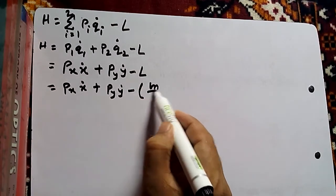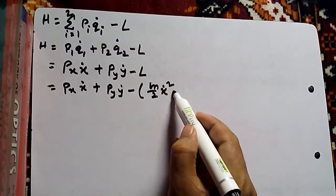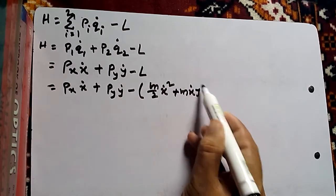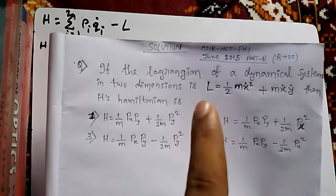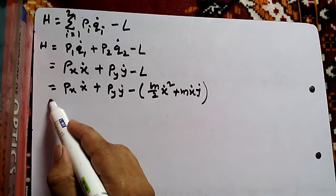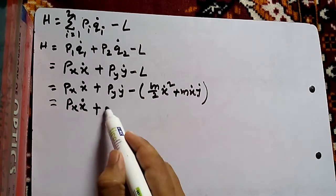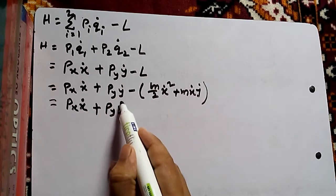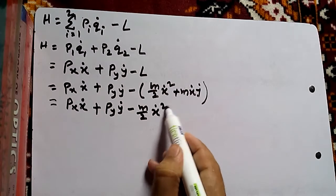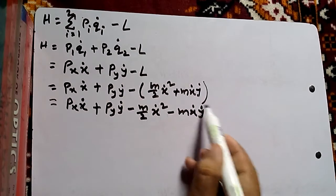We write down L. L equals M/2 times X-dot squared plus M times X-dot times Y-dot. Therefore we have Px X-dot plus Py Y-dot minus M/2 X-dot squared minus M X-dot Y-dot.